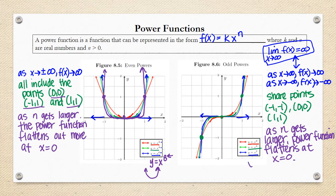If I were to draw y = x⁹, it's going to go through those three points because it's an odd power function, and it's just going to be a little bit flatter than x⁷, which is the one in blue. So that would be my rough sketch of that one.